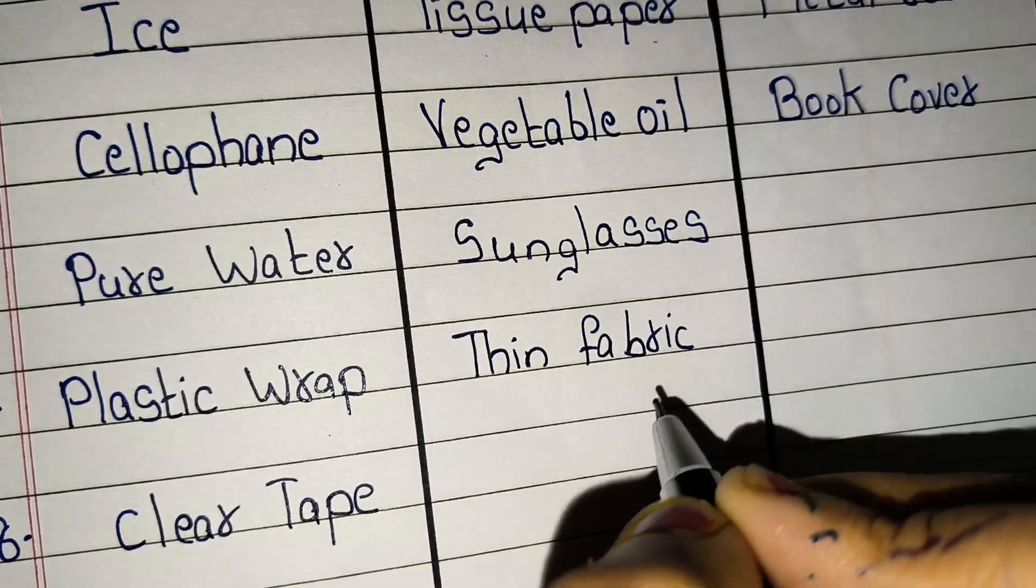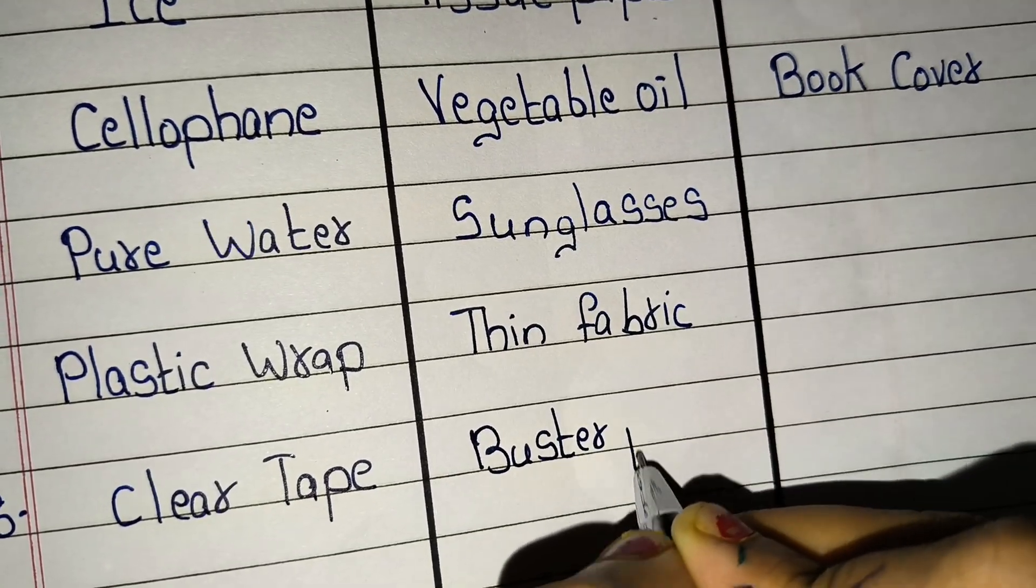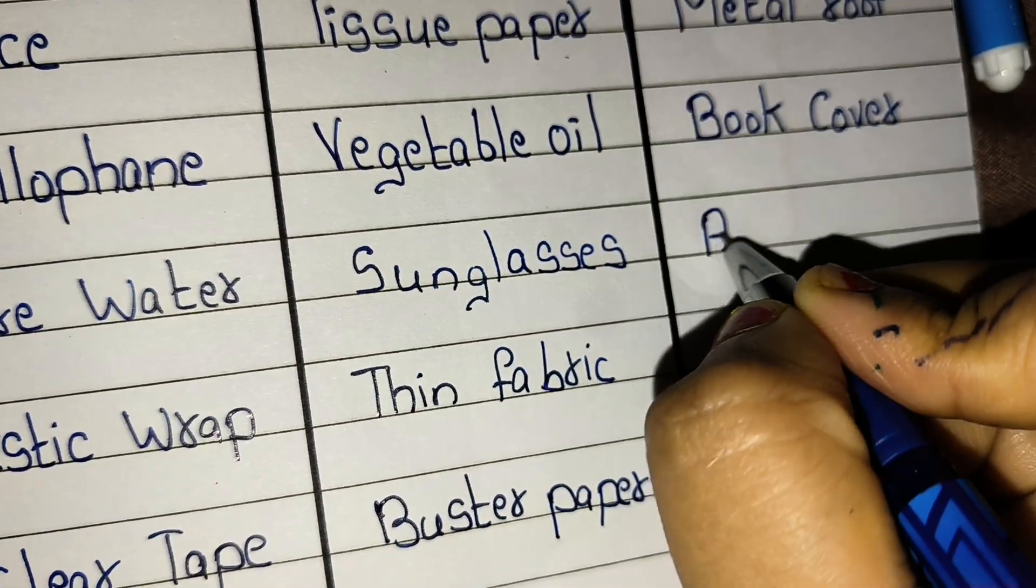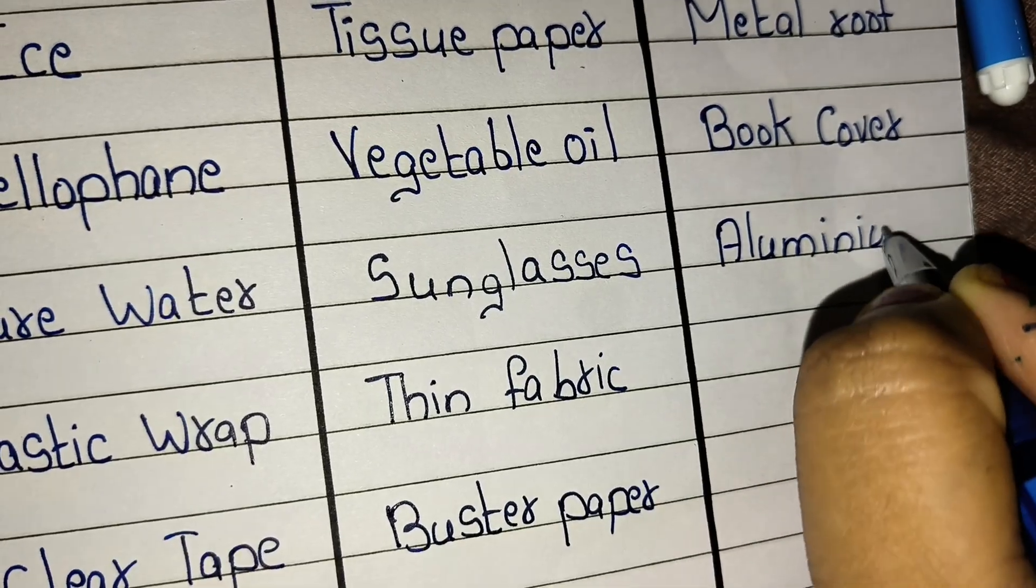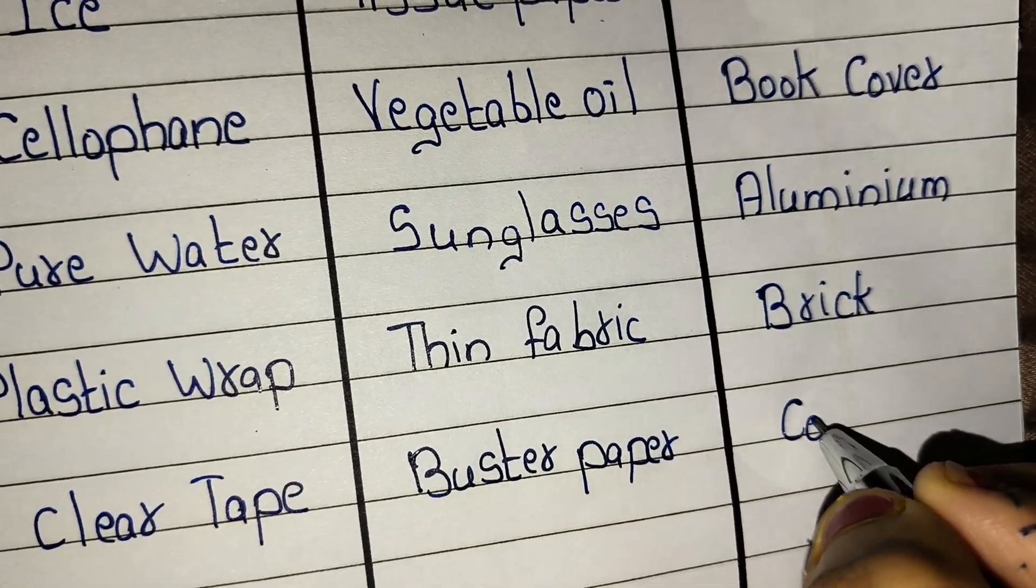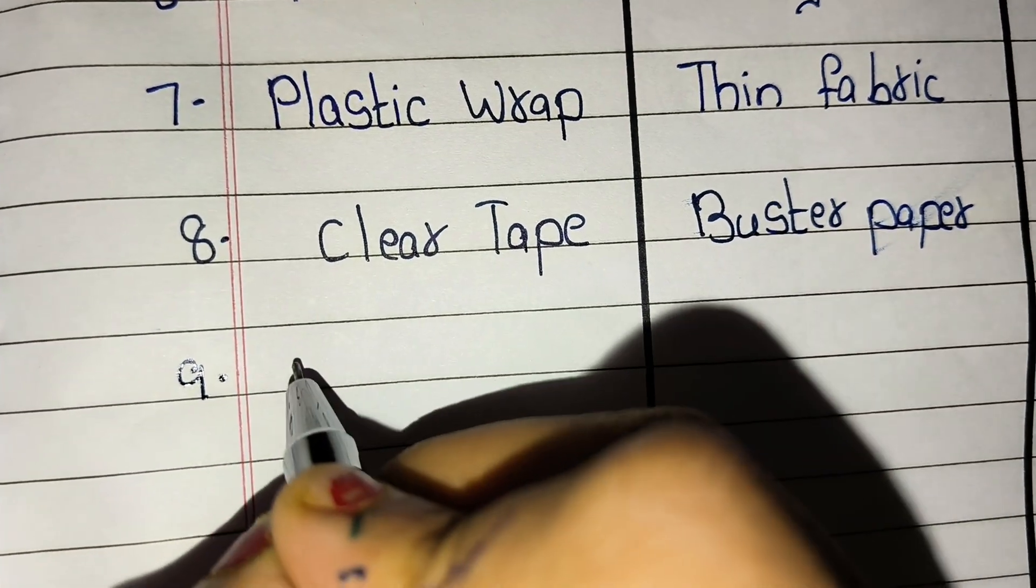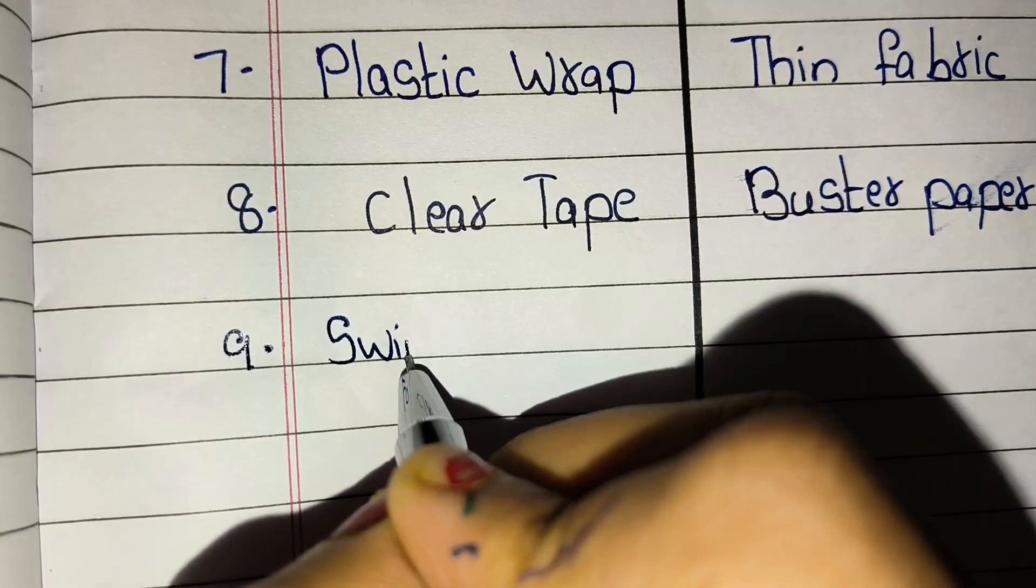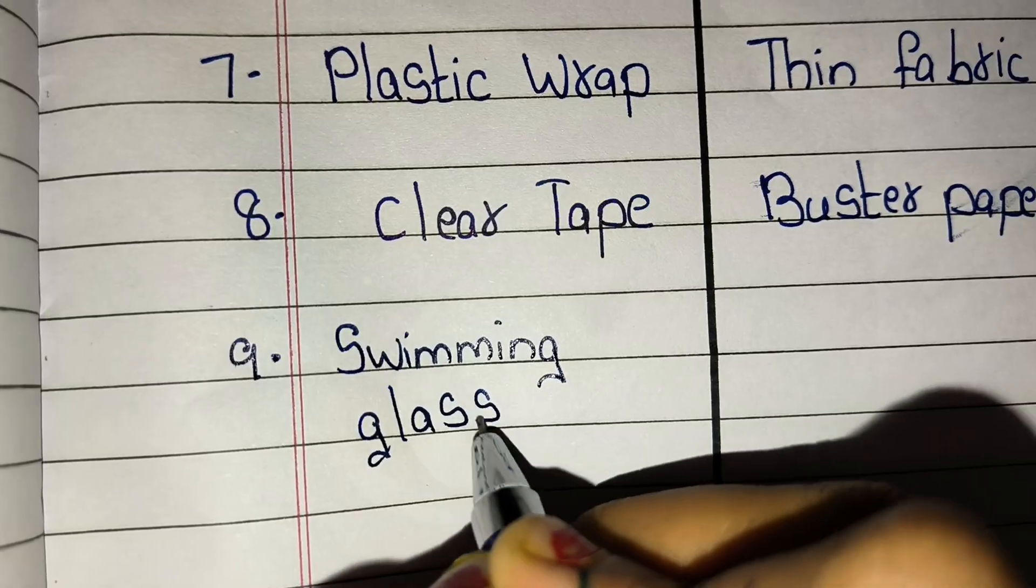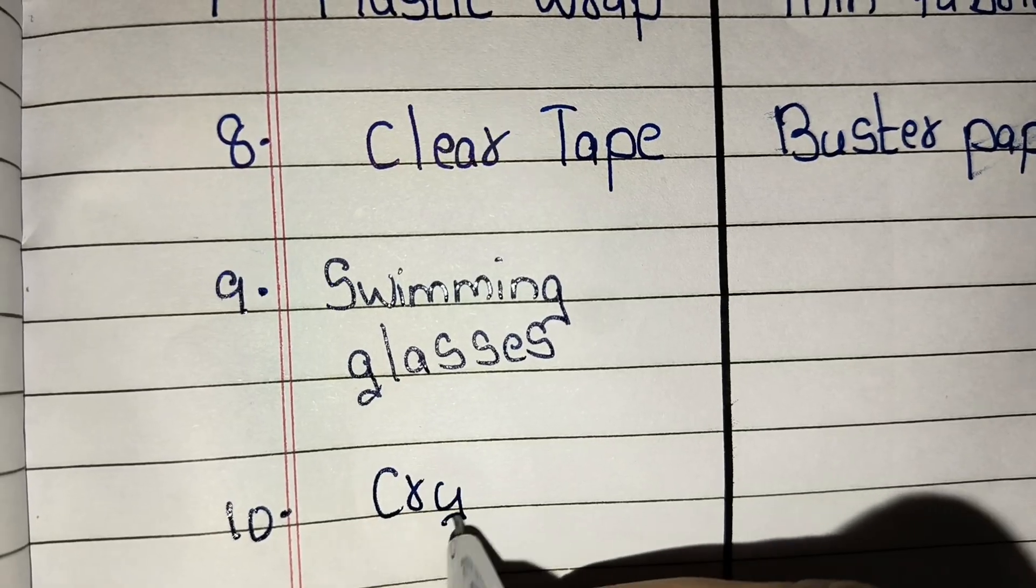Again, examples of translucent: sunglasses, thin fabric, butter paper. Ninth number: glass jar. Tenth number: crystal.